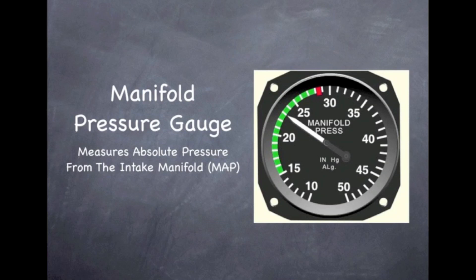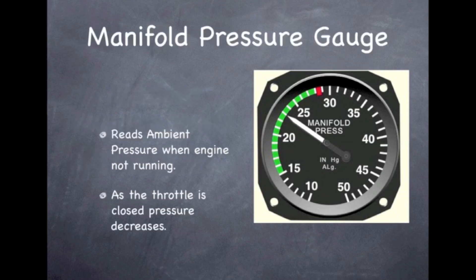To understand a constant speed propeller, we need to first understand what the manifold pressure gauge is. The manifold pressure gauge, and this is one instrument that most people get confused on, measures absolute pressure from the intake manifold. Absolute pressure from the intake manifold.